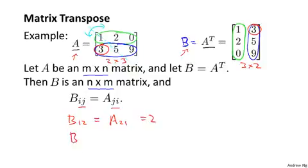B_23, that's B_23, which is this element 9. And that's equal to A_32, which is this element up here, 9. And so that wraps up the definition of what it means to take the transpose of a matrix. And in fact, that concludes our linear algebra review.